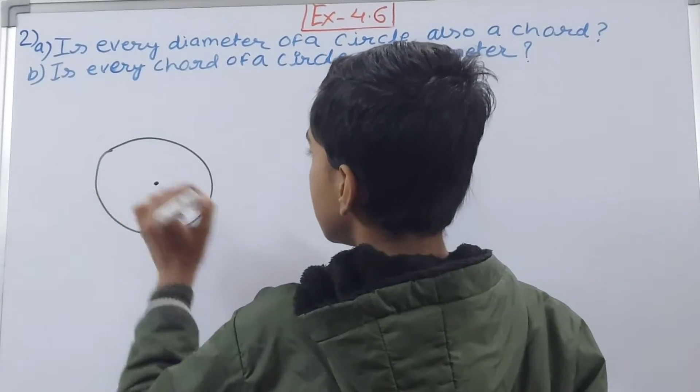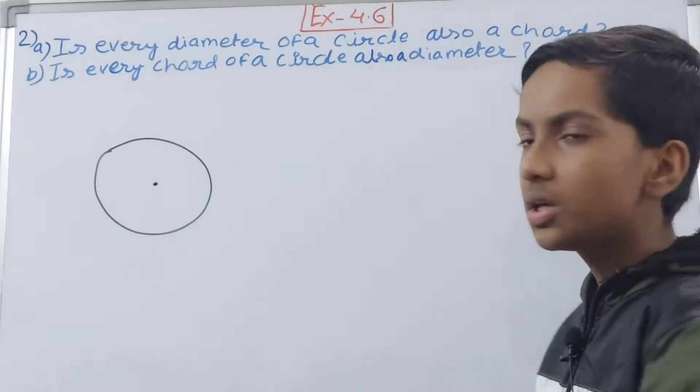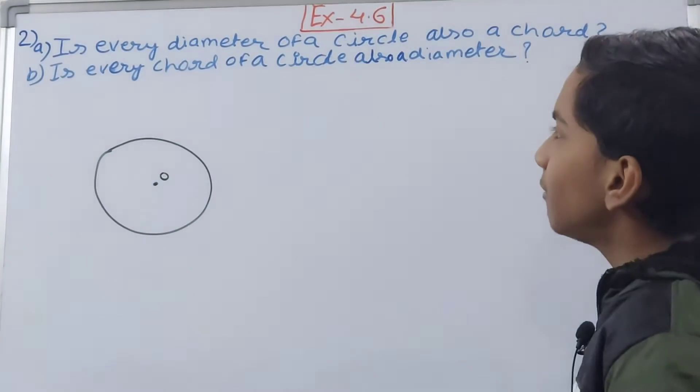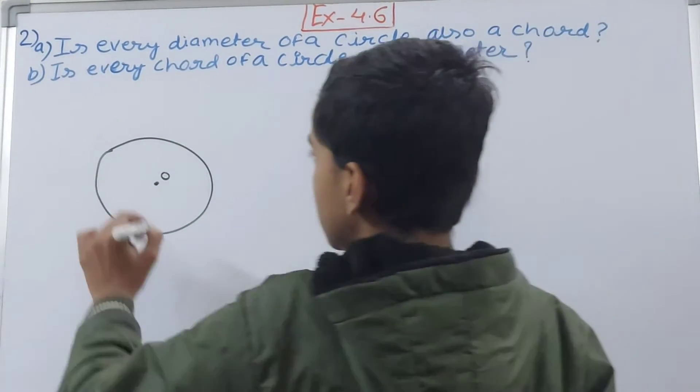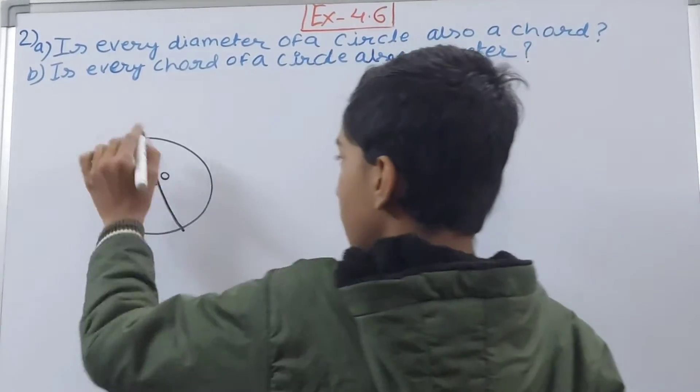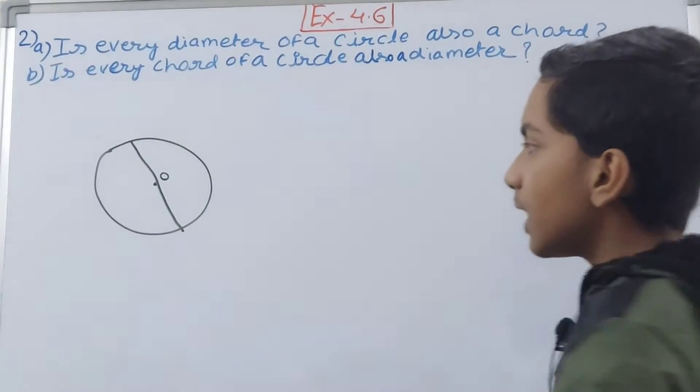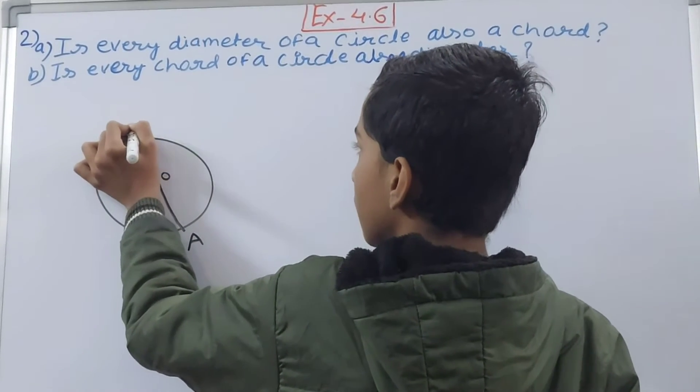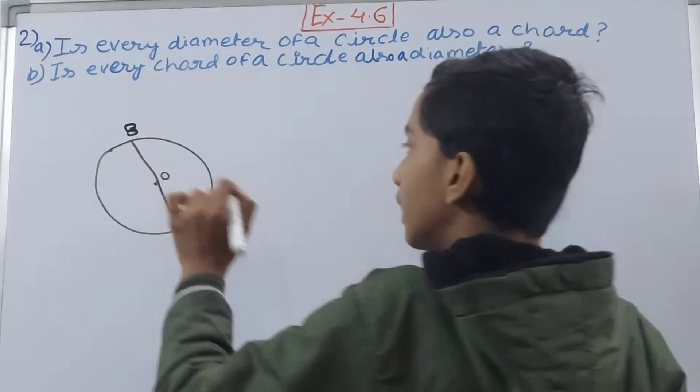Let me take this point here. Let us say this is our center of our circle. Now I will make a diameter through this. Let us make it like this. It is not really that accurate, but consider it as a diameter AB. This is the diameter AB.